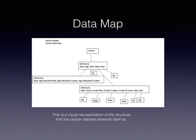Data map. The data set is a dictionary that starts with a list of reports, such as cancer. Cancer splits off into four keys: age, year, data, and area. Each of those keys can split off into different keys, such as data splits off into count, crude rate, crude upper, crude lower, race, and sex.